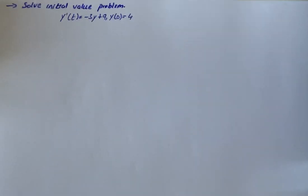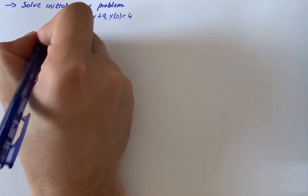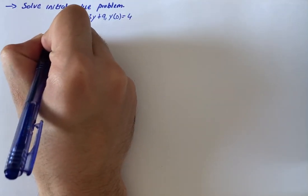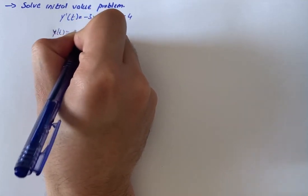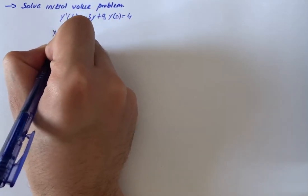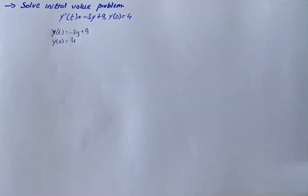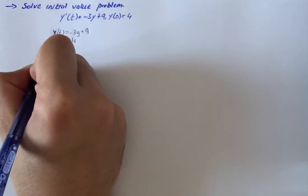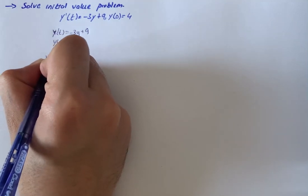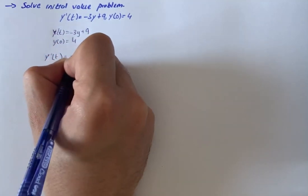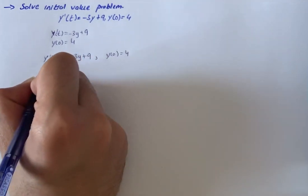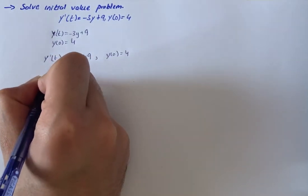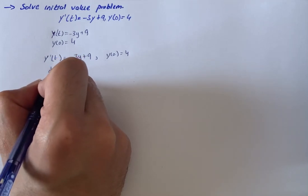The question says solve the initial value problem. We have the initial values: y prime of t equals minus 3y plus 9, and y of 0 equals 4. So we write it as y'(t) = -3y + 9 where y(0) = 4. We then write this as dy/dt equals minus 3y plus 9.